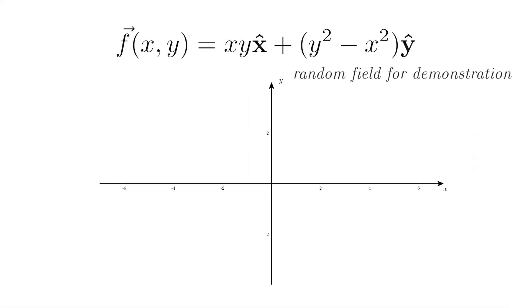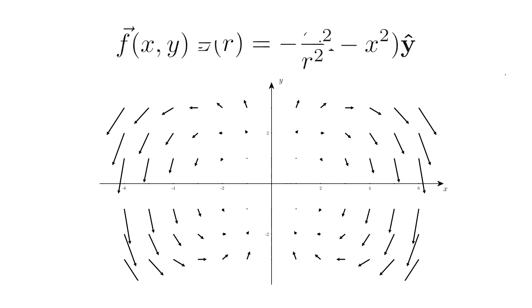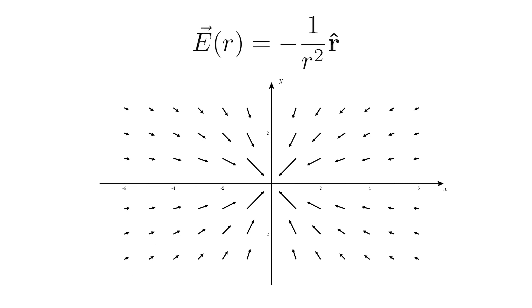So for example, this equation would render this vector field. And again, we only draw some vectors. Or another equation, one over r squared, will result in this field here.